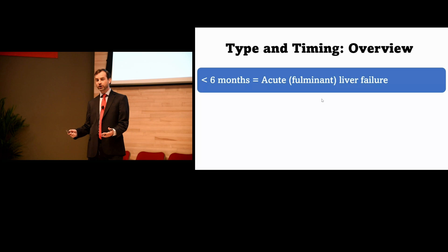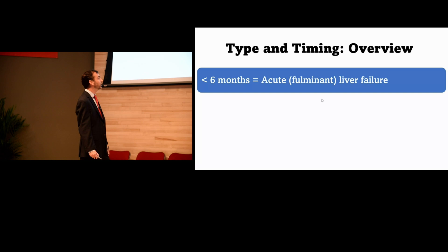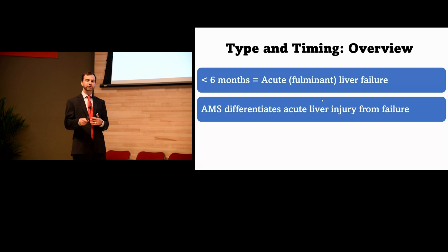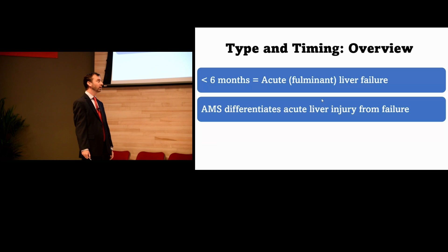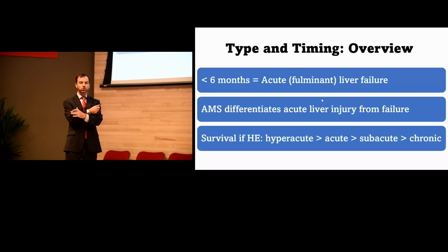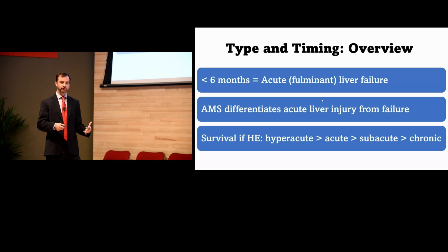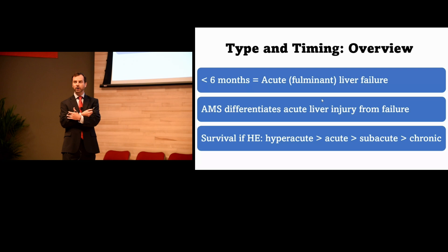Altered mental status is what moves you from acute liver injury — which is about lab findings — to acute liver failure, which is a clinical diagnosis. Once they progress to hepatic encephalopathy, mortality inversely correlates with the chronicity of the disease. Hyperacutes do better than acutes, do better than subacutes, do better than chronics.